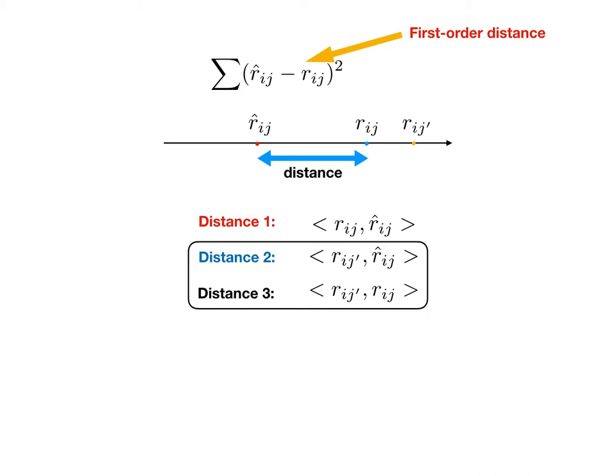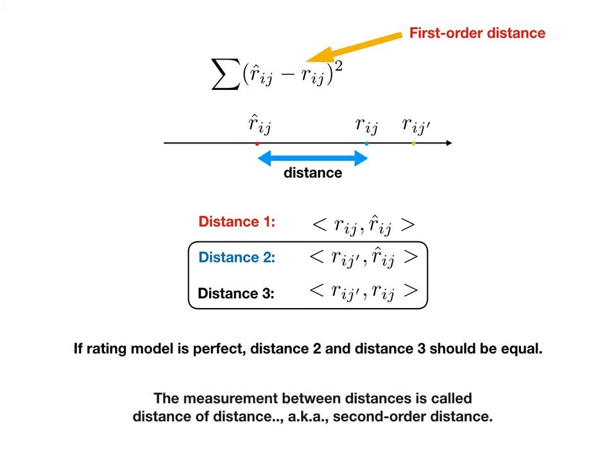Distance 2 is from the rating model's opinion and distance 3 is the real distance. So if the rating model is perfect, the values of two distances should be equal. We call this measurement distance of distance, or the second-order distance.